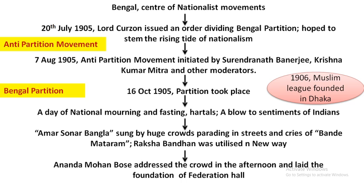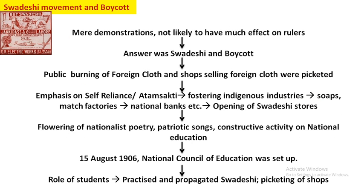In 1906, in East Bengal, a very interesting association was formed which represented the Muslim community. The anti-partition movement also became a boycott movement. As part of this, people resolved to promote indigenous goods, use their own cloth, and not buy British goods from any foreign shop.